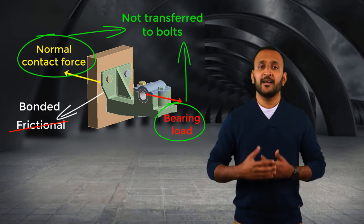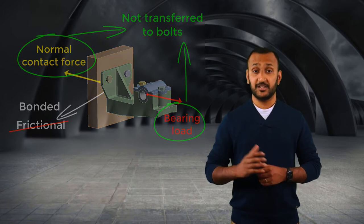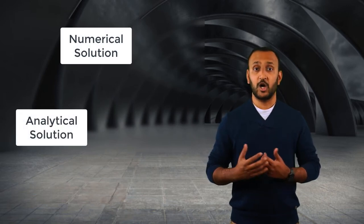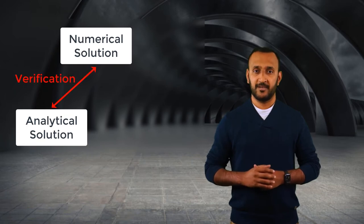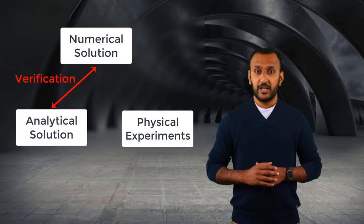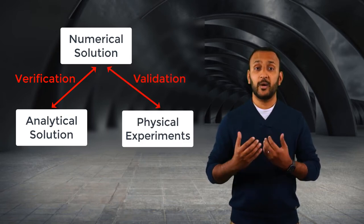So we need to verify and validate the results from simulations before making engineering decisions using them. Verifying the accuracy of the numerical solution by comparing the results against an analytical solution is called verification. And comparing the model predictions against physical experiments to see how well the model is capturing the physics is called validation.